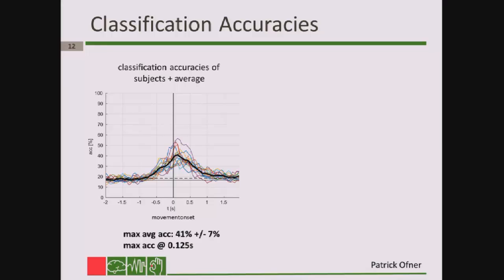Now let me turn to the results — first classification accuracy, then the pattern. The classification accuracies are shown on the left side for all 15 subjects, and the average is the black thick line. Second zero corresponds to the movement onset — not the cue, but when the subjects actually started the movement. The dashed horizontal line is the significance level. The average reaches a maximum classification accuracy of around 40% right after movement onset, and the classification accuracy became significant more than 500 milliseconds before the movement onset.